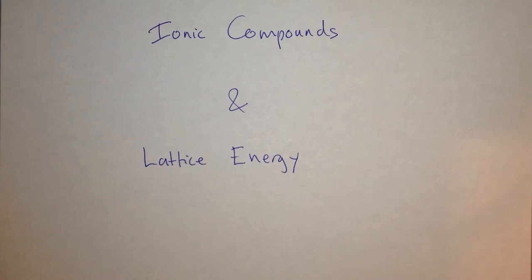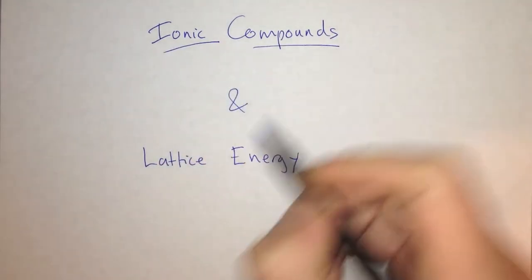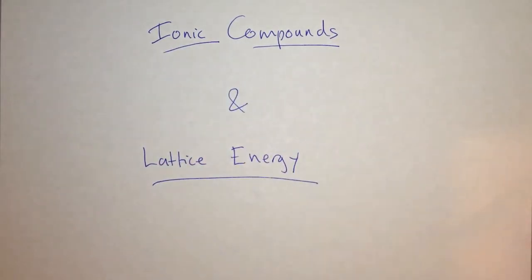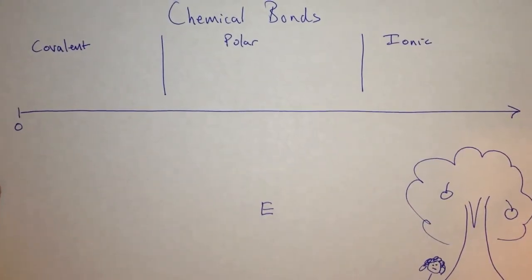In this video, I'm going to talk about ionic compounds and lattice energy, because the book's explanation of these topics was such a train wreck. But first, we need to talk about the types of chemical bonds.